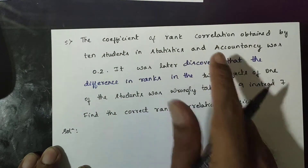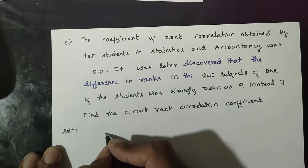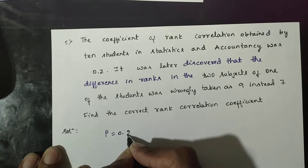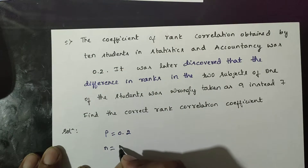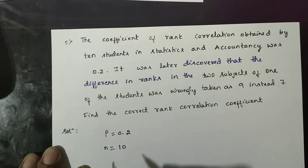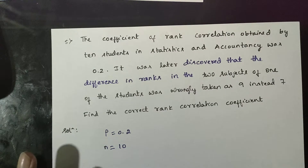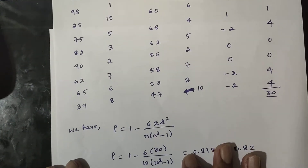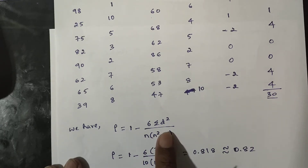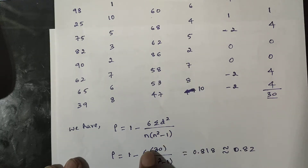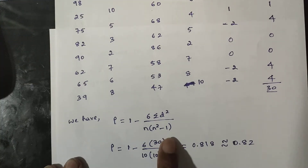The coefficient of rank correlation is given as 0.2, with n equal to 10 students. Using the rank correlation formula: r equals 1 minus 6 into summation of d² divided by n into n squared minus 1.